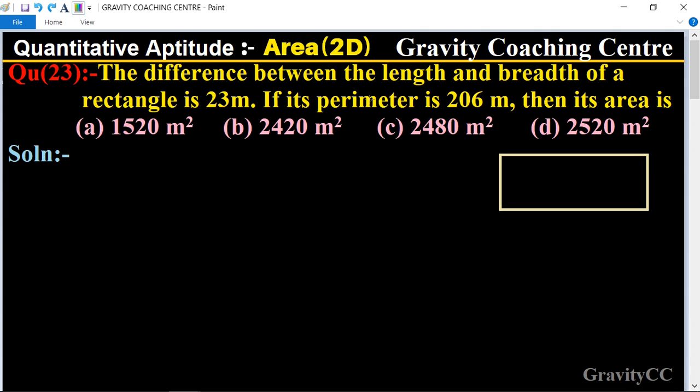In this question, it's given that the difference between the length and breadth is 23 meters. So first of all, we let the length be x and breadth be y. According to the question, the difference between length and breadth is given equal to 23 meters, so this is the first equation.